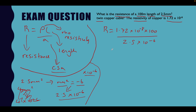Now we can input everything into our calculator at once: 1.72 times 10 to the minus 8, multiplied by 100, divided by 2.5 times 10 to the minus 6. That gives us an answer of 0.68. But we're not done yet — go back to the question.